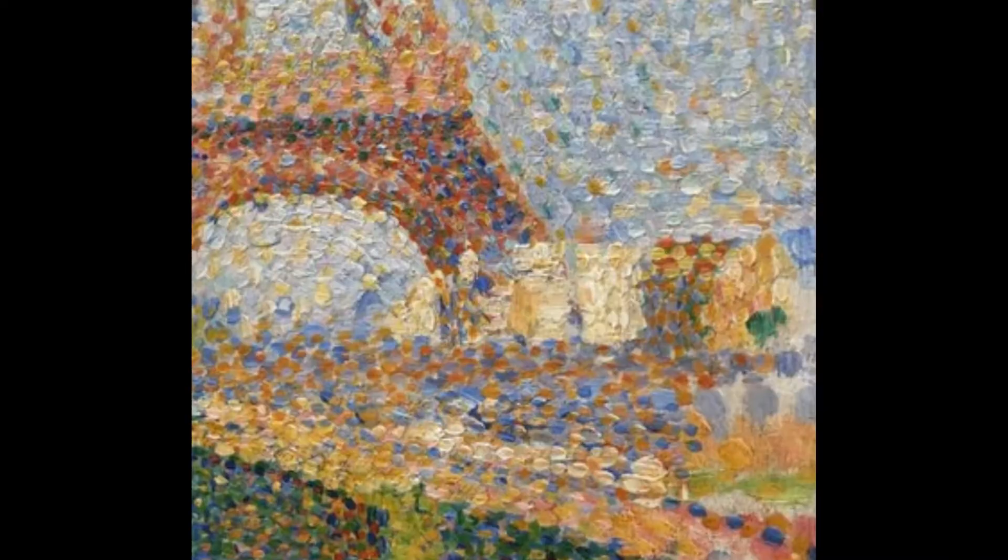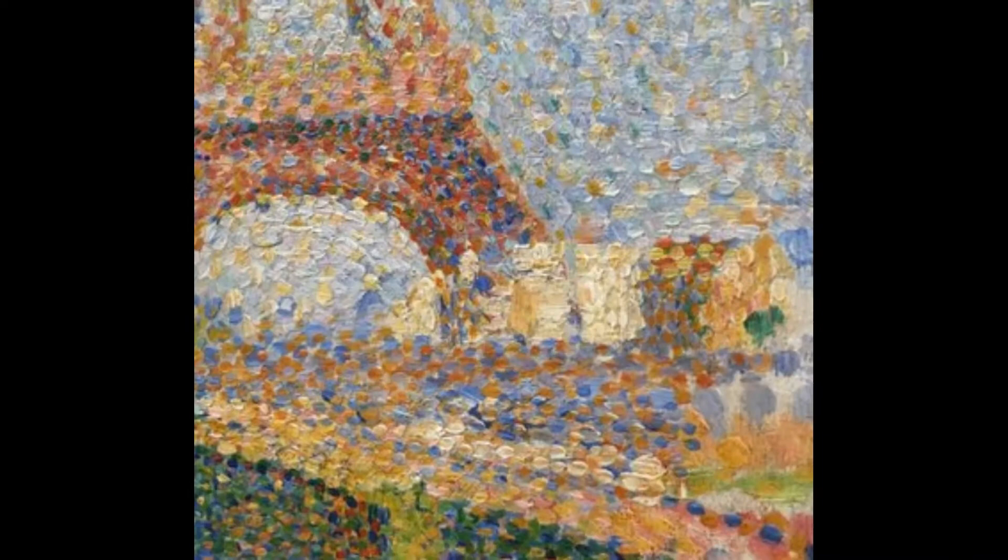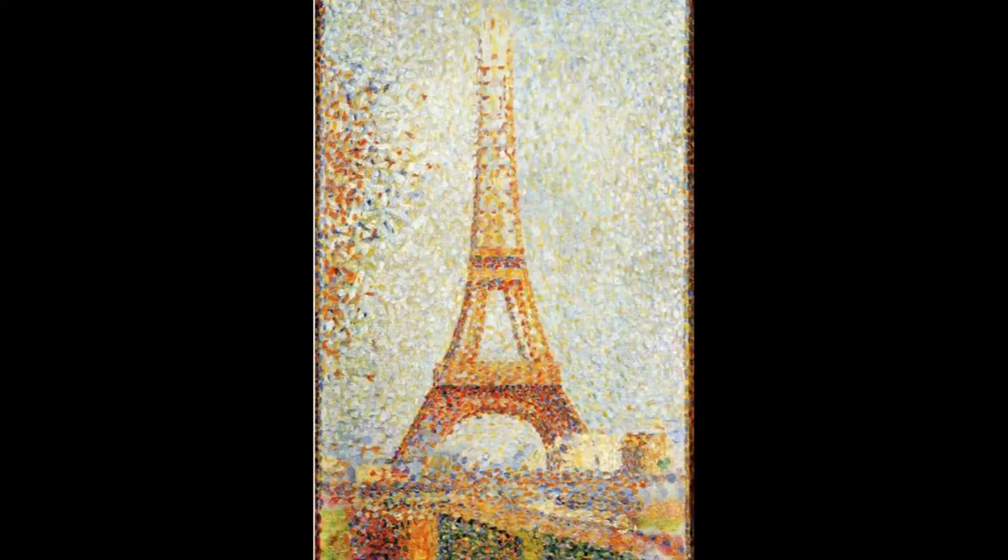In many ways, pointillism is as much a science as it is an art. Pointillism uses the science of optics to create different colors from many different dots, placed so close to each other that they blur into a single image to the eye.